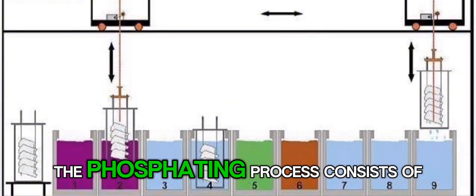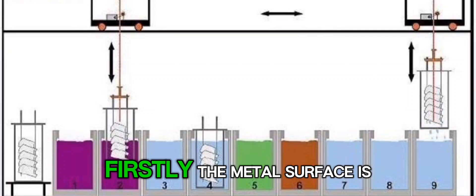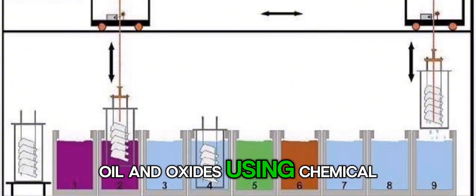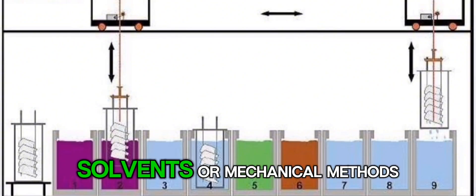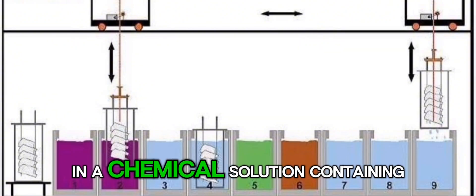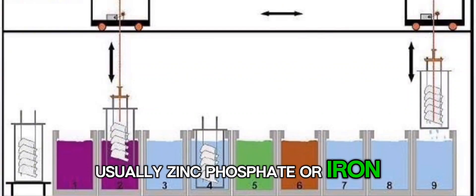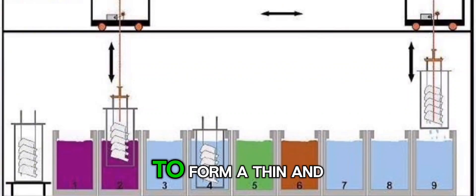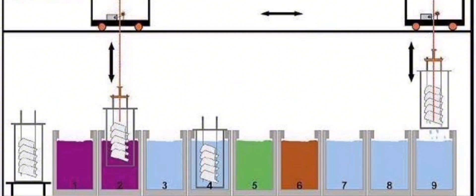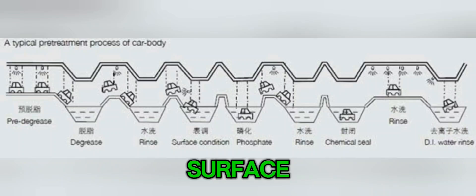The phosphating process consists of several crucial stages. Firstly, the metal surface is thoroughly cleaned from dirt, oil, and oxides using chemical solvents or mechanical methods. Next, the metal is immersed in a chemical solution containing phosphate, usually zinc phosphate or iron phosphate, to form a thin and uniform phosphate layer on the metal surface. The final stage involves rinsing and drying the phosphated metal surface.